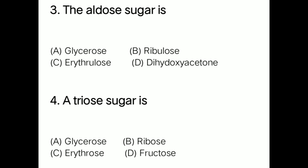Question 3: The aldose sugar is option A glycerose, option B ribulose, option C erythrulose, option D dihydroxyacetone. Correct answer is option A: glycerose. Question 4: A triose sugar is option A glycerose, option B ribulose, option C erythrose, option D fructose. Correct answer is option A: glycerose.